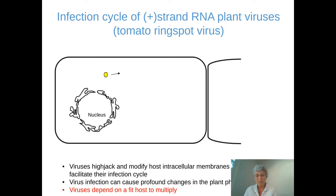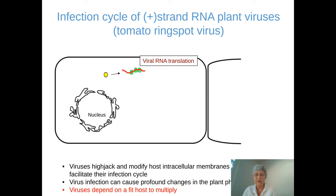Viruses will first infect the cells, and they enter the cells as an encapsulated viral particle. After decapsidation, the viral RNA will be released, and the first thing that needs to happen is the viral RNA must be translated. This will happen using the translation machinery of the host, so the virus completely depends on its host for this step and for all the steps of its infection cycle.